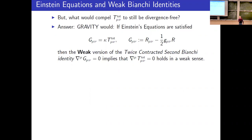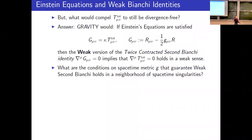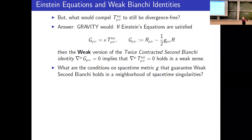The catch is that the twice-contracted second Bianchi identity, in order to even write it down, requires your metric to have three derivatives. If you have a singularity, that does not make sense anymore. However, if you could make sense of this thing holding weakly, then this will imply the energy tensor is divergence-free, and we may have a chance of showing this holds weakly — after all, it's an identity supposed to be true for any metric.